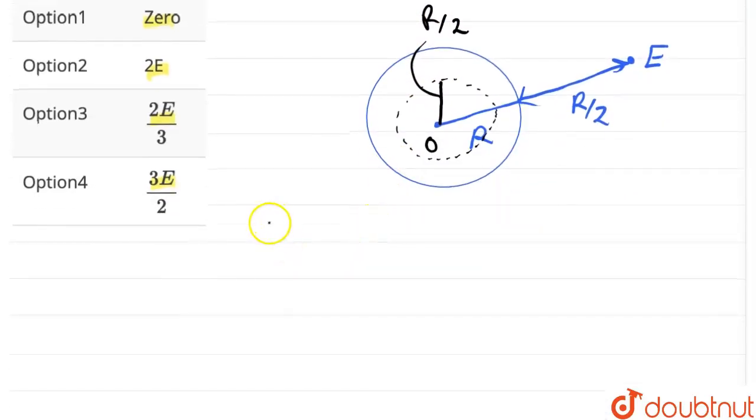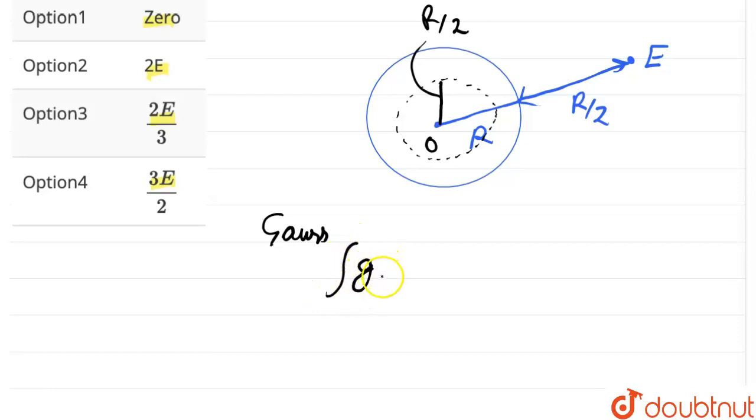Now, according to Gauss's law in gravitation, we have integration of gravitational field intensity E times the area vector is equal to minus 4π times gravitational constant G and the mass enclosed by the Gaussian surface.